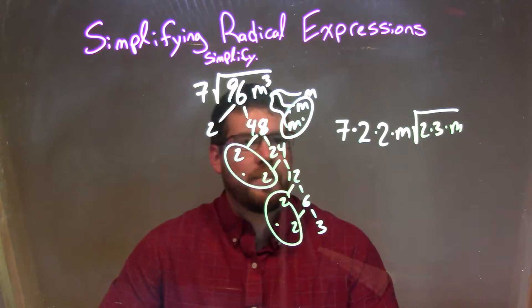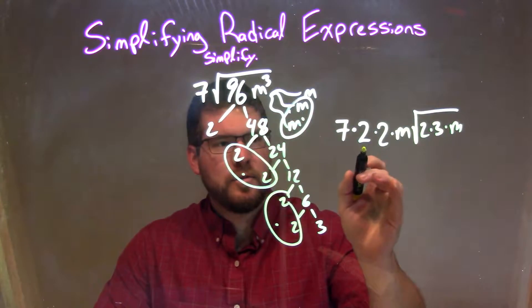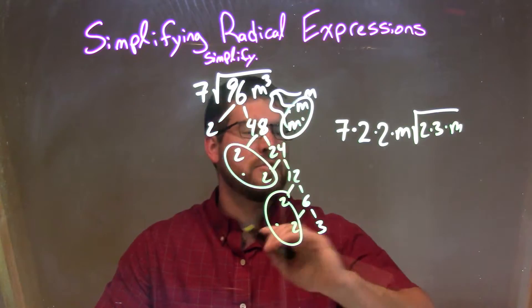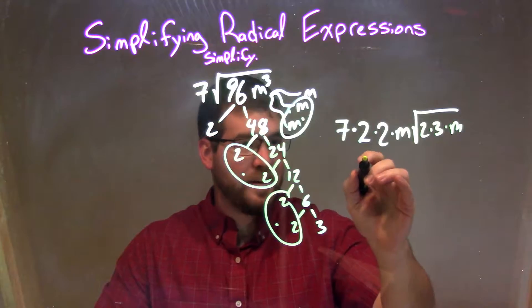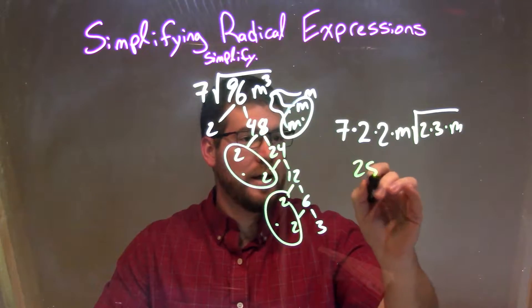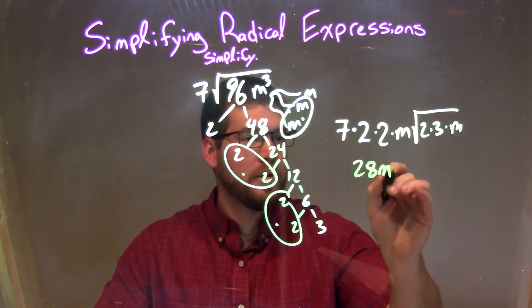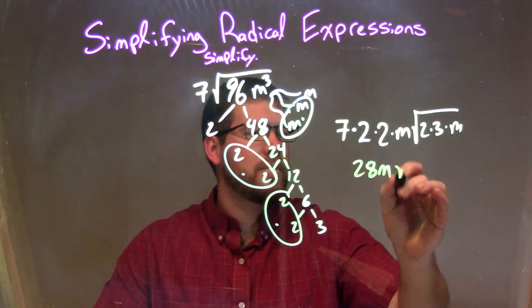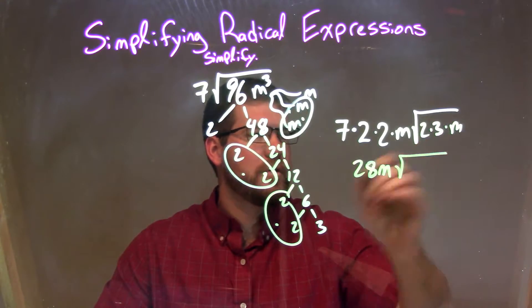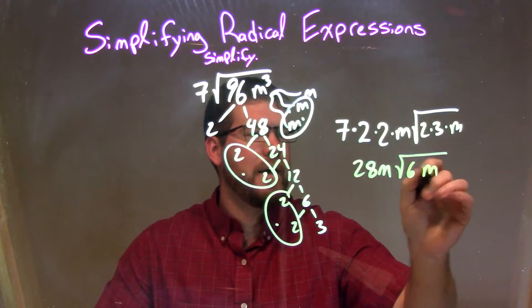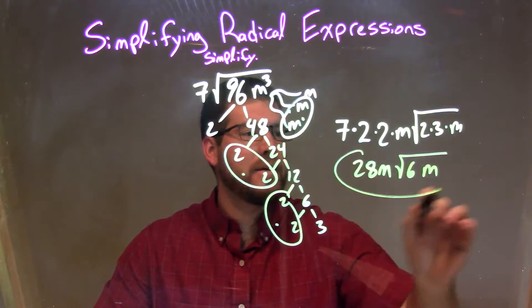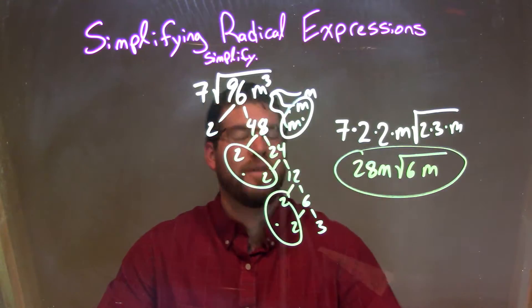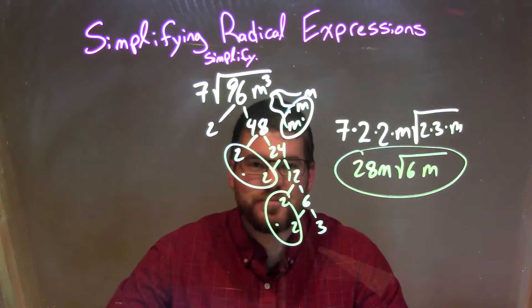So now let's simplify. 7 times 2 is 14, times 2 is 28. So we have 28m here, times the square root of 2 times 3, which is 6m. And that is my final answer.